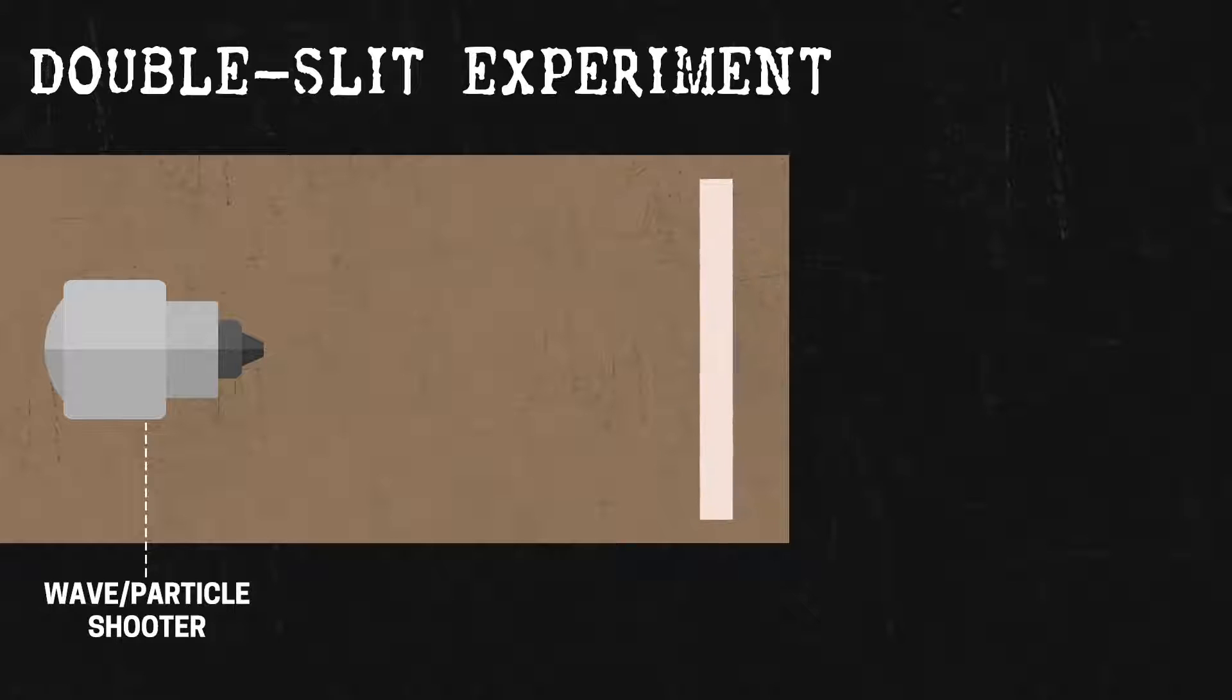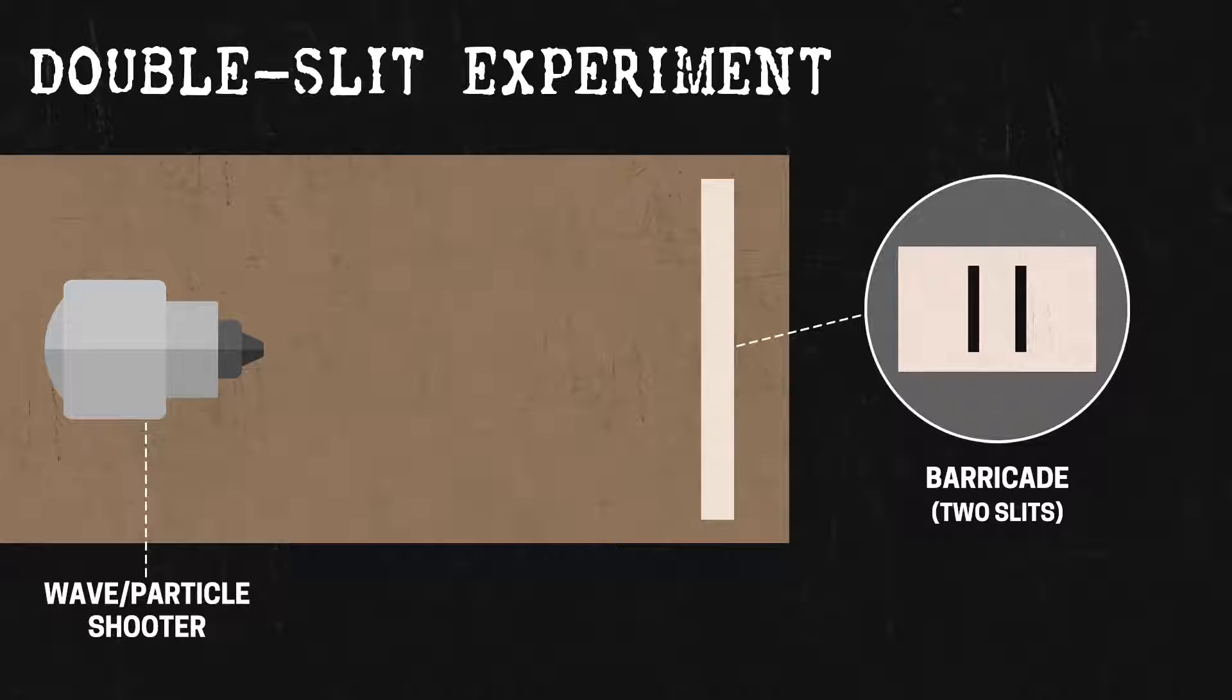Next, you need a barricade with two parallel slits cut out of it. Whatever material you shoot will hit the barricade and create different results.